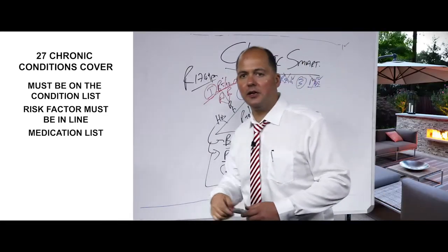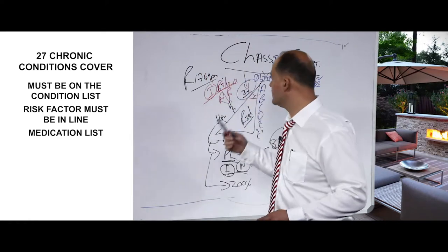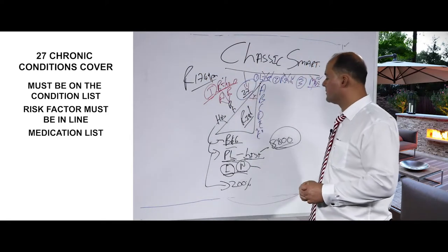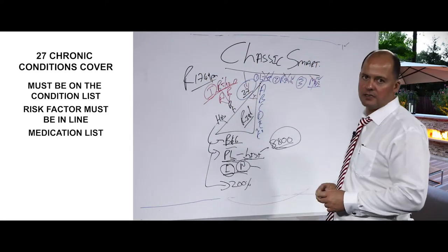If your risk factor is not in line, the medication will not be covered. And if your condition is not on the list, it cannot be paid from the 27 chronic conditions benefit, which forms part of the risk portion benefit on the Classic Smart Plan.